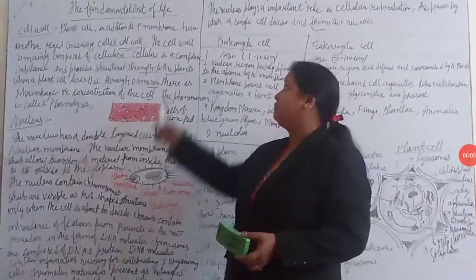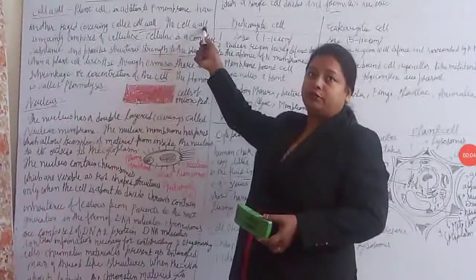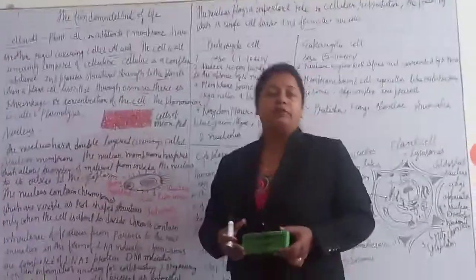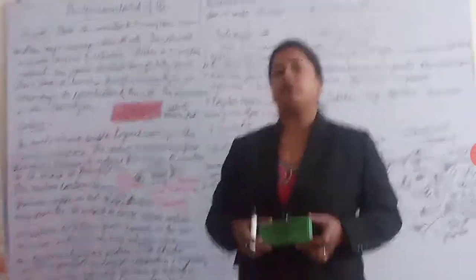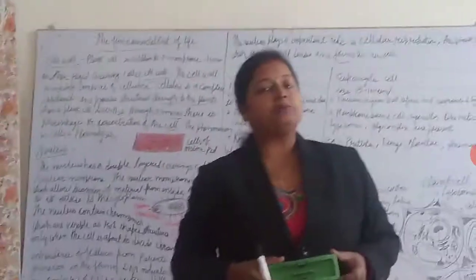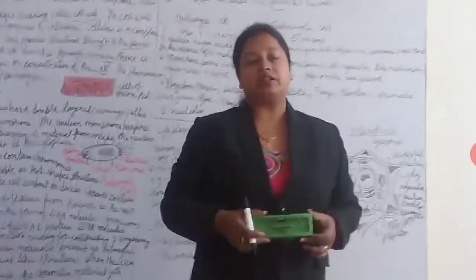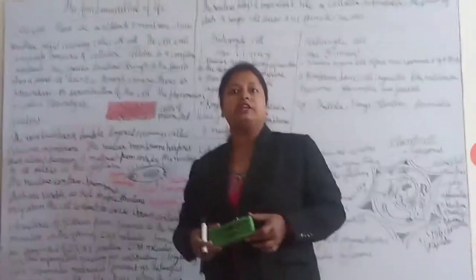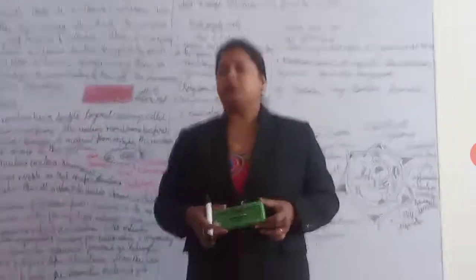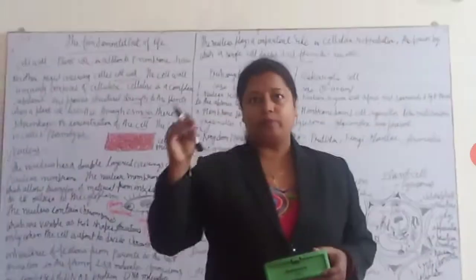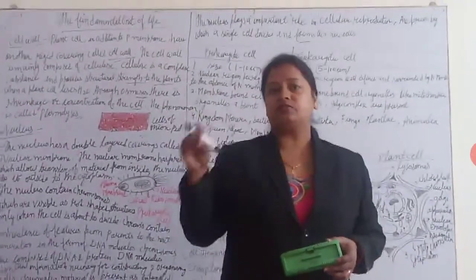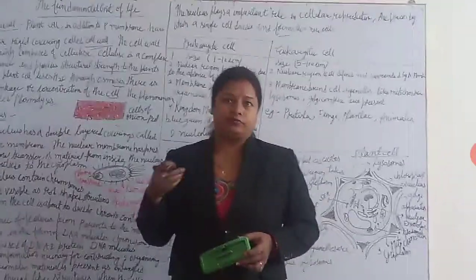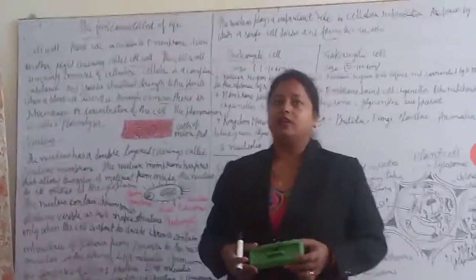Today's new topic is our fundamental unit of life, Class 9, second part. In the previous part, I have already explained about Robert Hooke. Robert Hooke observed a piece of cork under a microscope and saw small compartments. That compartment is called a cell.